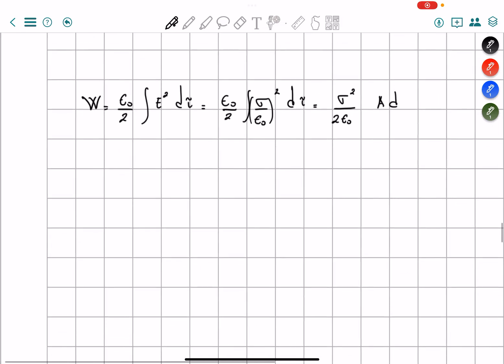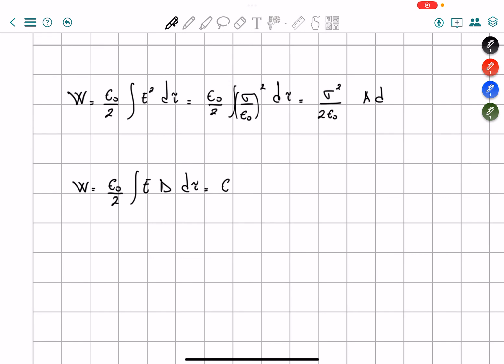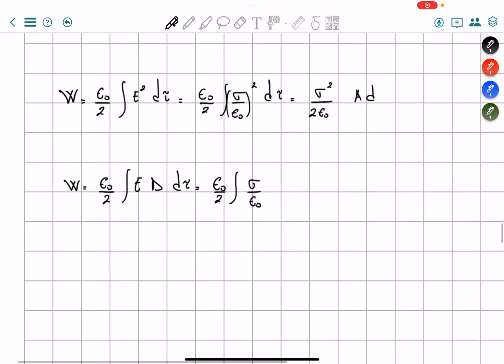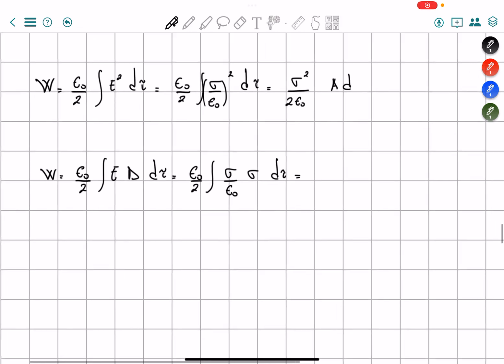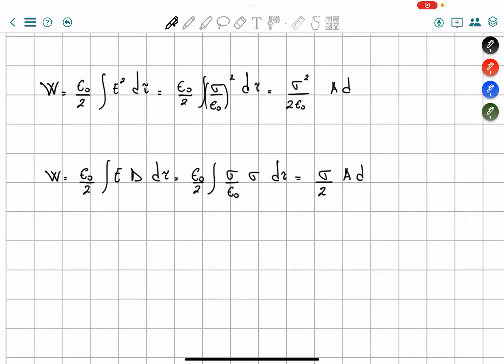Another way I can find it is by doing W is equals to epsilon naught over two times the integral of E times D, D tau, which is equals to epsilon naught over two integral of E, which is surface charge over epsilon naught, and D is equals to surface charge and D tau. So here again, we're just going to solve this one. This equals to our surface charge over two times the area and the distance, that's the volume that we're taking consideration.